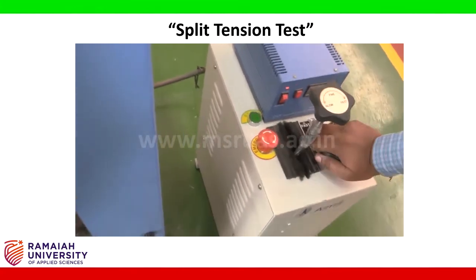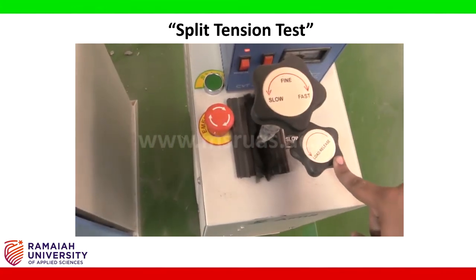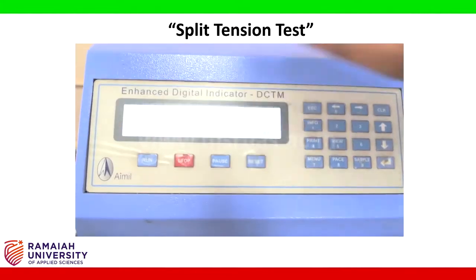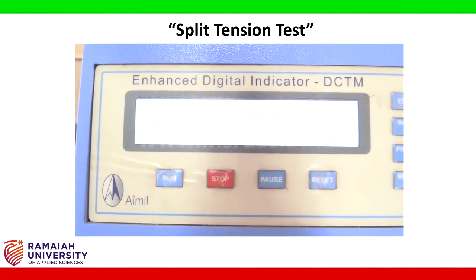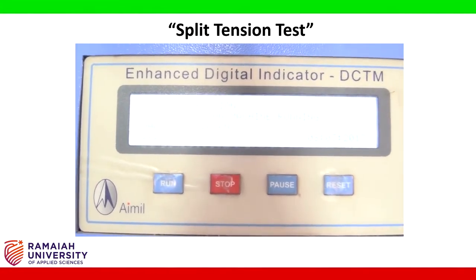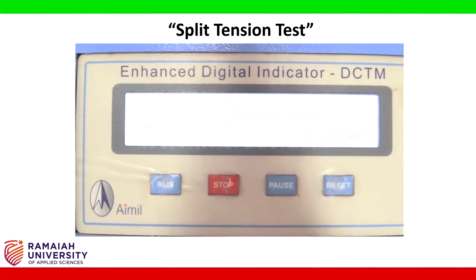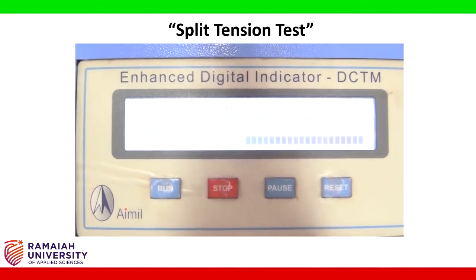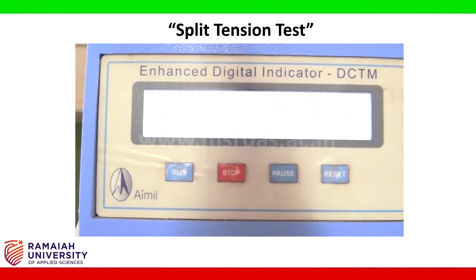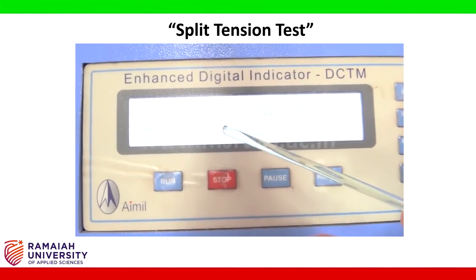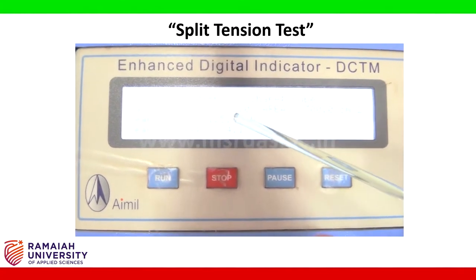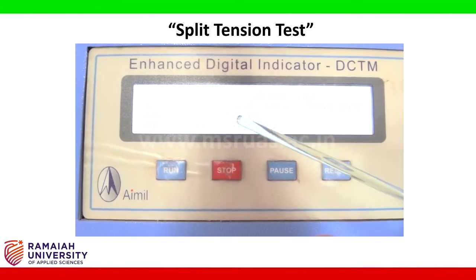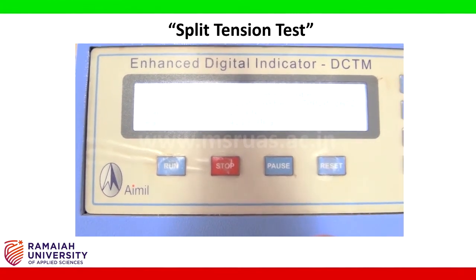We release the emergency button and give the command to run. Once the run command is given, the load begins to apply. Once the specimen fails, we get a peak load, which we note as P. Using the formula, we calculate the split tensile strength of the concrete.